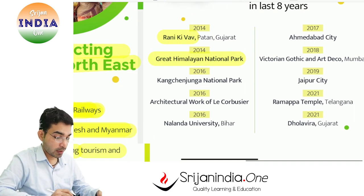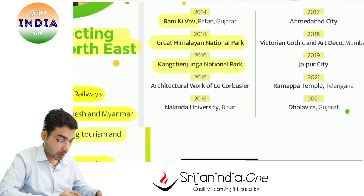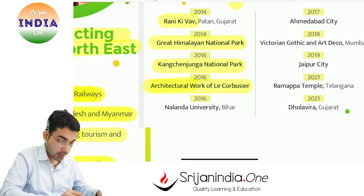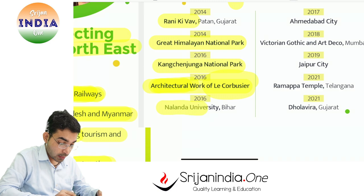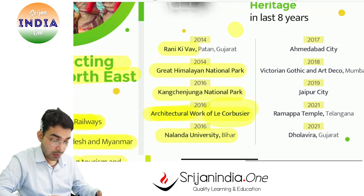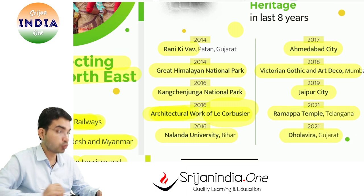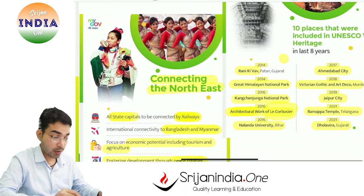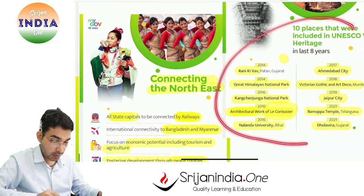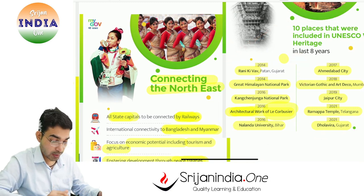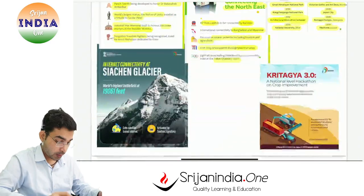Ten places included in UNESCO World Heritage Sites in recent years: Rani ki Vav in Patan, Gujarat; Great Himalayan National Park; Kanchandzonga National Park; architectural works of Le Corbusier; Nalanda University; Ahmedabad city; Victorian Gothic and Art Deco buildings of Mumbai; Jaipur city; Ramappa Temple; and Dholavira in Gujarat. Dholavira is very important. These are all very important UNESCO World Heritage Sites.